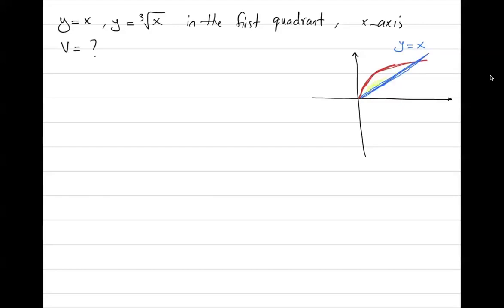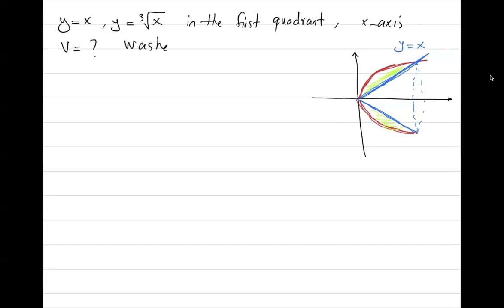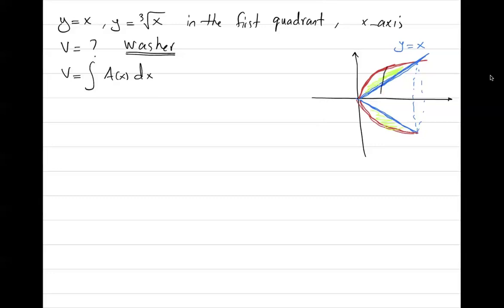When you rotate this object around the x-axis, this is what you have. To calculate the volume, suppose we apply the washer method. The volume is equal to the definite integral of A(x) dx. Here, A(x) is the area of the cross-section, which is a washer shape.